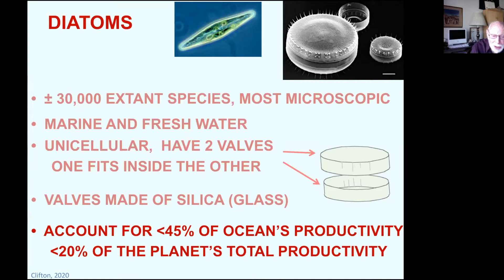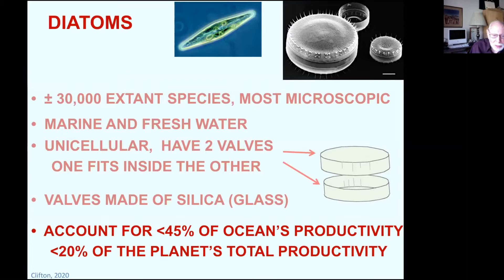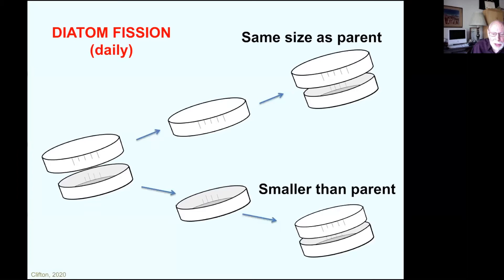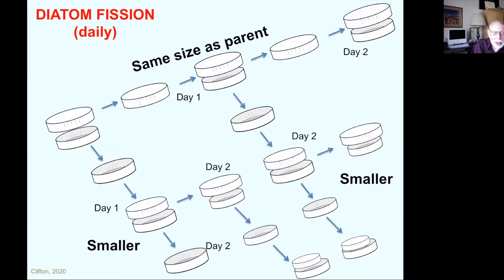Diatoms have a remarkable reproductive cycle. Their primary approach is simple fission, where the valves break apart and each one grows a new inside valve. This means one daughter cell is the same size as the parent, but the other is smaller. With time, there will always be one the same size as the original, but the rest get smaller and smaller. After six days — the average lifespan of a diatom — if they all survived, you'd have one the size of the original and the rest quite a bit smaller.